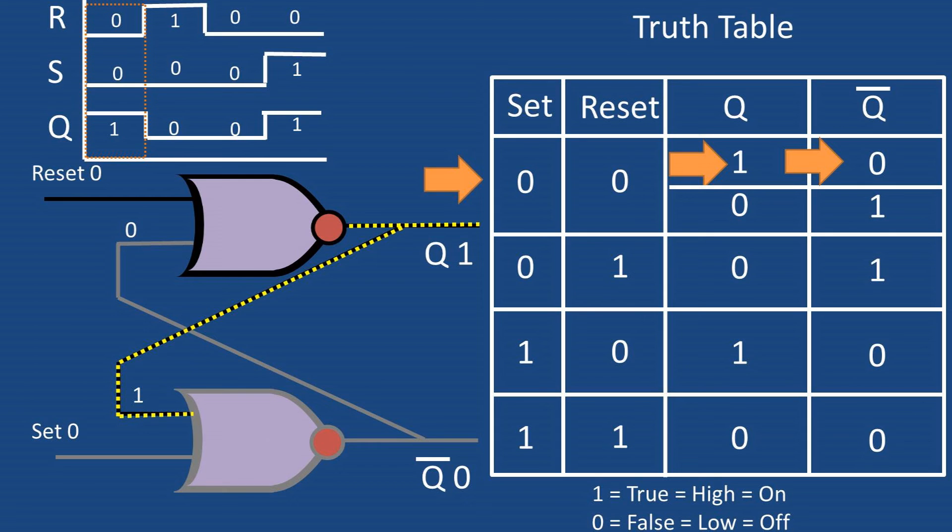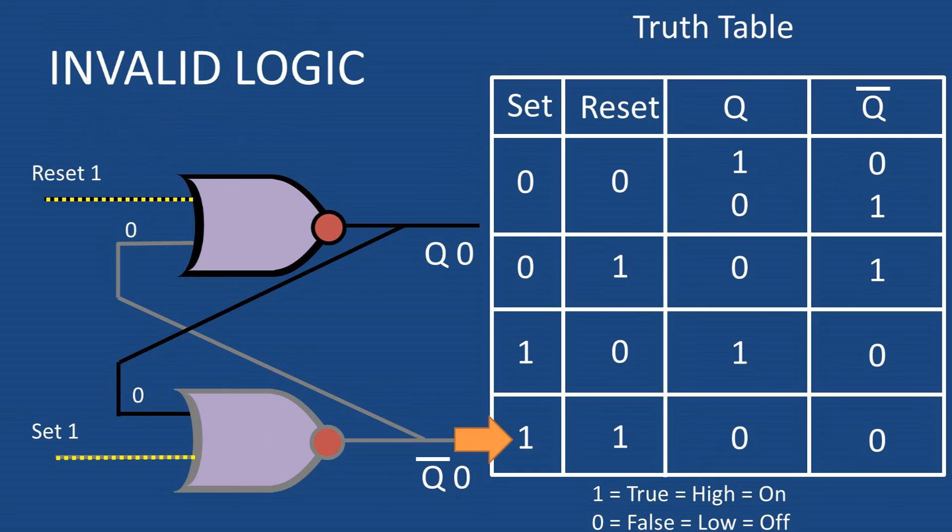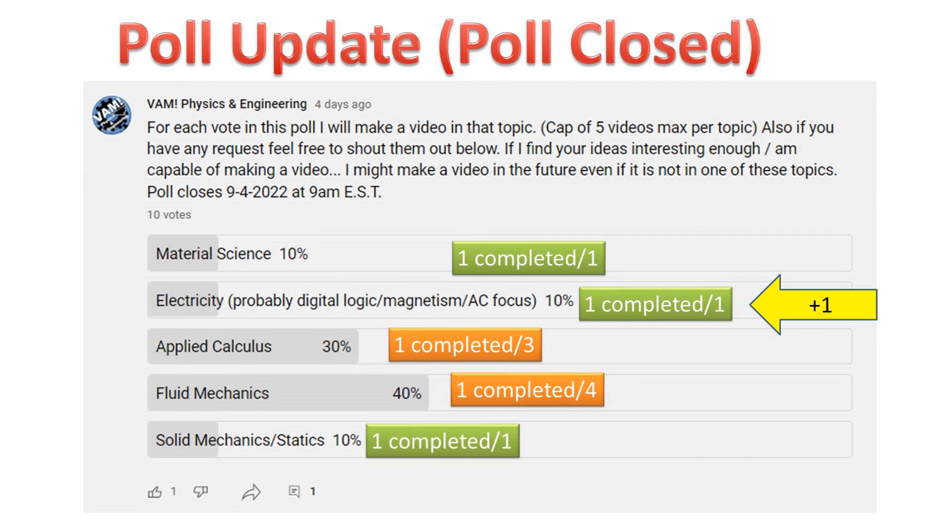So what happens if we send a reset value of one and a set value of one? We get an impossible or invalid logic of both Q being equal to zero and NOT Q being equal to zero. Electrically this is possible but as far as logically we can't possibly have this.